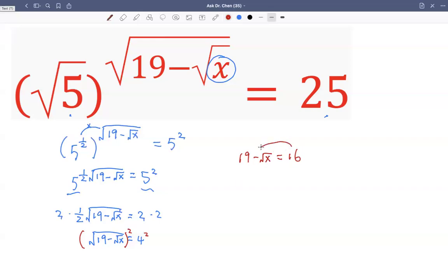Then we move 16 to this side becomes negative, so 19 minus 16. We move negative square root of x to the other side becomes positive. 19 minus 16, that's 3. So square root of x equals to 3.